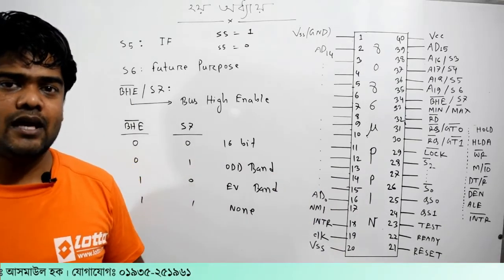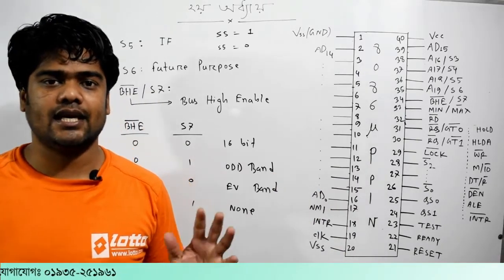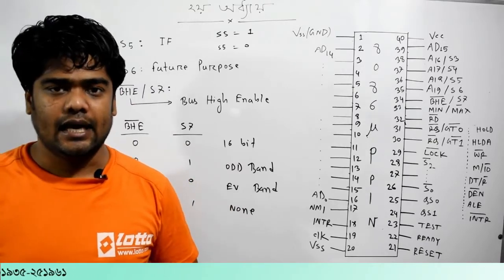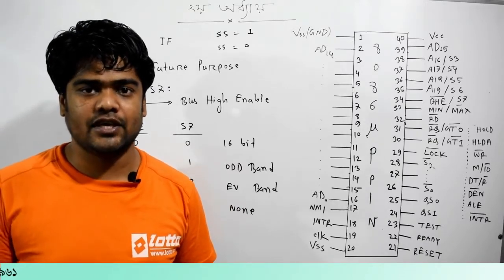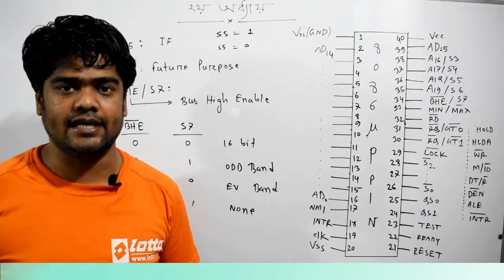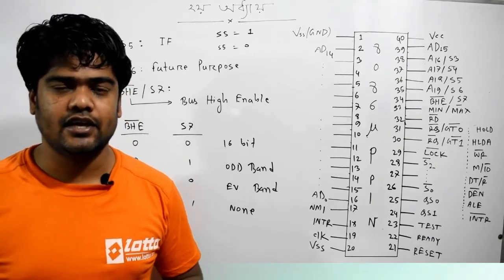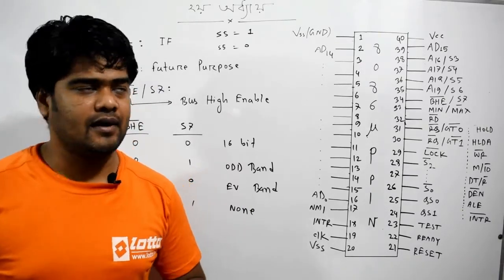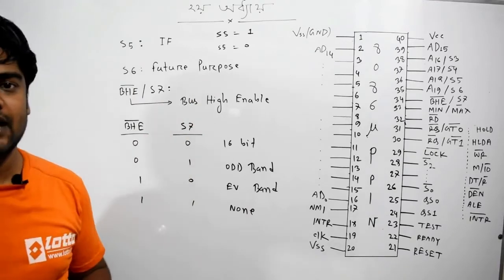This is the networking portion. This is class A, B, C, D. This is the IP address. So let's take a look at this. Future purpose.